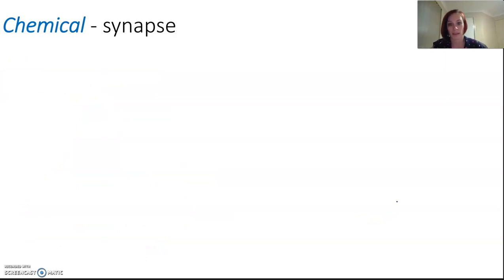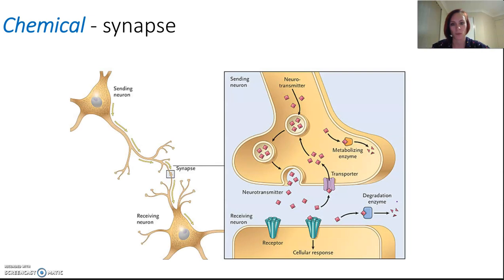Chemical messages happen at the synapse. Once the action potential has reached the end of that neuron, at the axon terminal, it triggers the release of a chemical signal, which is that neurotransmitter. And it transmits it between the two in this area called the synapse. The synapse is that gap between the neurons, or between the neuron and an effector like a muscle.